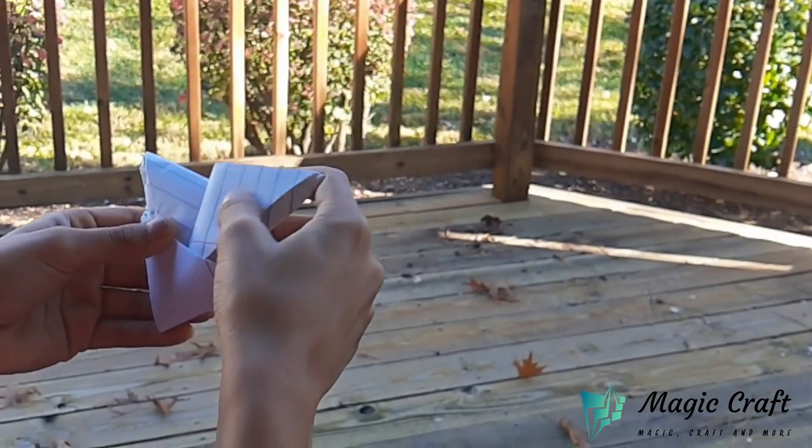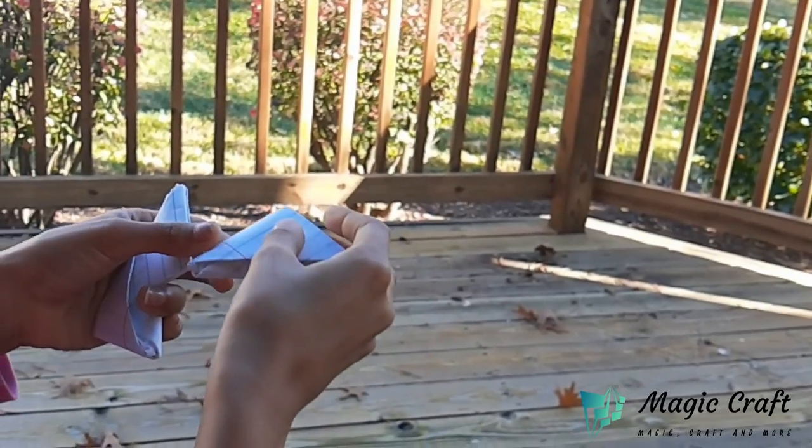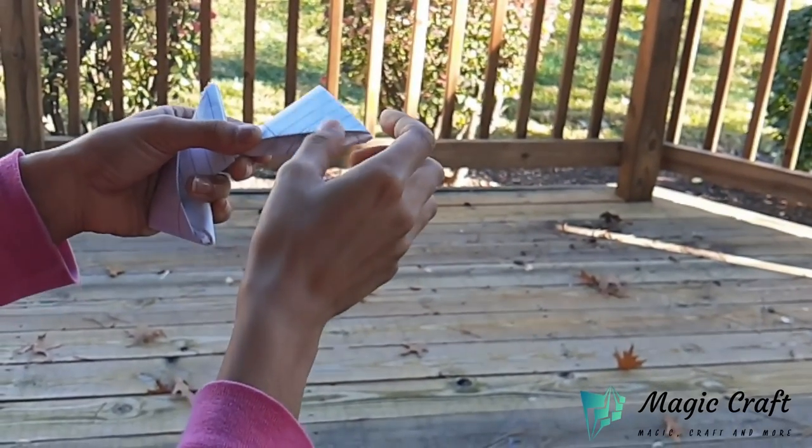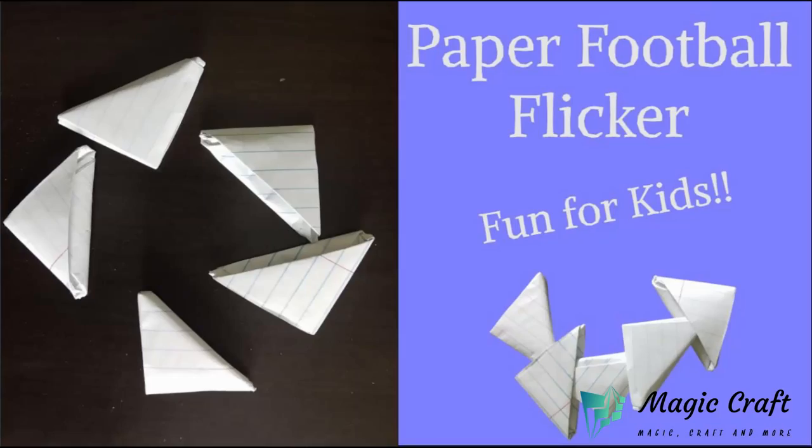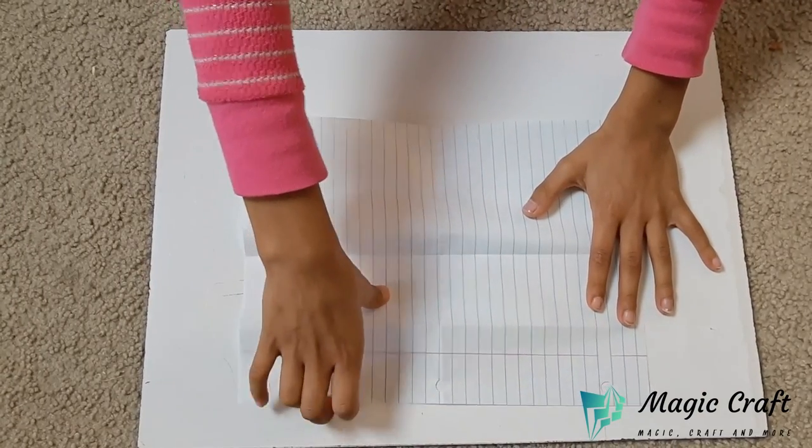Hey guys, welcome back to my channel. Today I'm going to show you how to make a football flicker. So without further ado, let's get started. First, fold the paper in half.